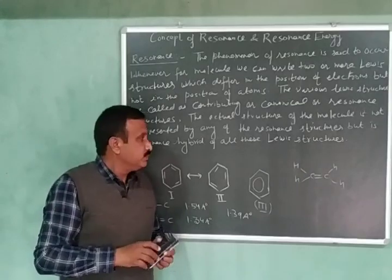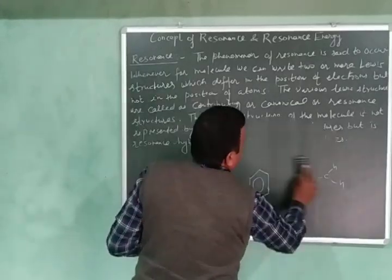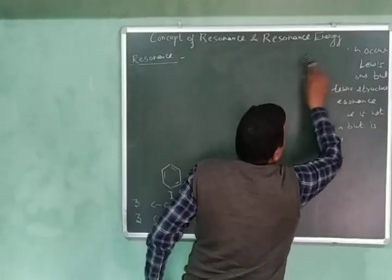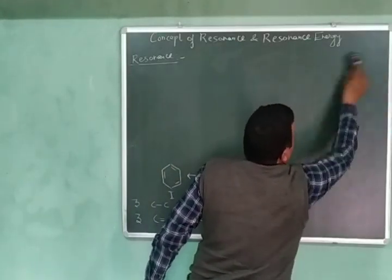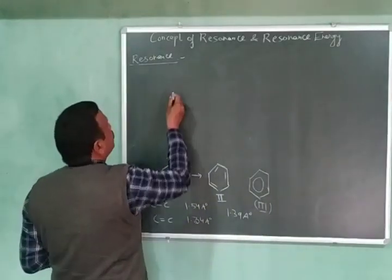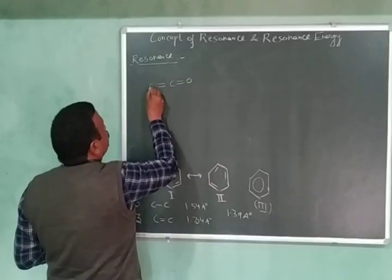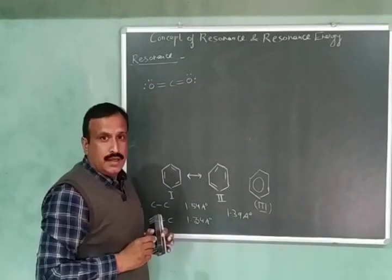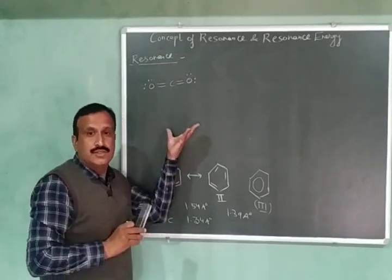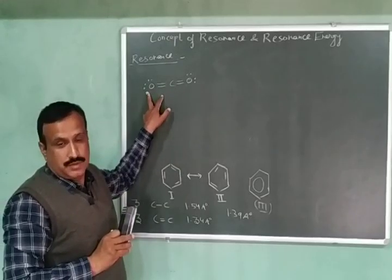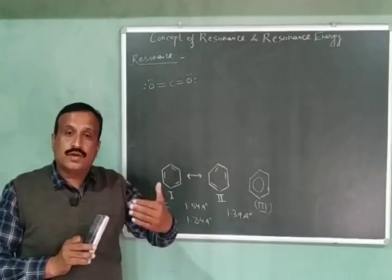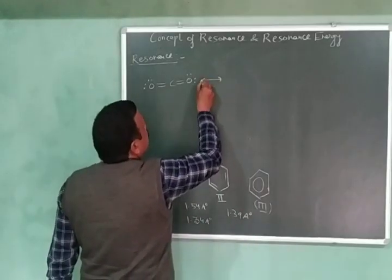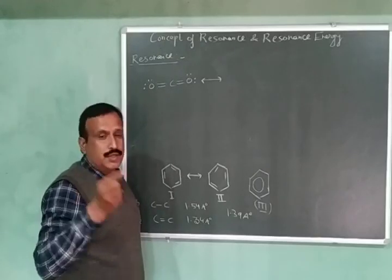Let us explain resonance with another example — that of carbon dioxide. We know that carbon dioxide has a linear structure in which the carbon atom is doubly bonded to both oxygen atoms. We know that oxygen has two lone pairs. From this structure, we can clearly see that there are two carbon-oxygen double bonds. Now we will write some more resonating structures, or Lewis structures, for carbon dioxide. The double-headed arrow is used to indicate resonance.